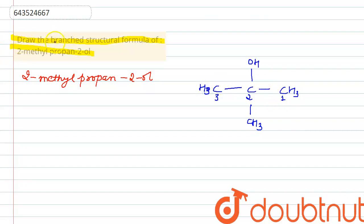In the question it is asked draw the branched structure formula. Therefore, the branched structure formula for 2-methyl propan-2-ol can be given as this. Thank you so much.